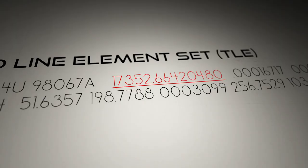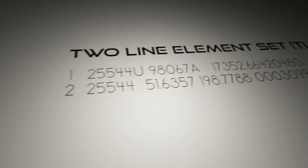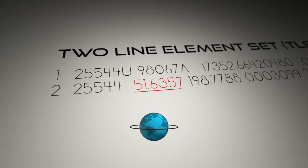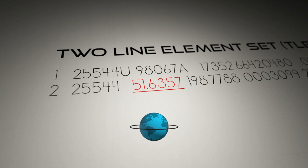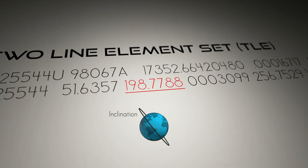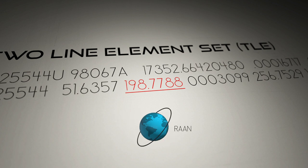After epoch time, we move down to the second line, and we have inclination. In this case, it is 51.6 degrees, so this object is somewhat inclined. Next is right ascension of the ascending node, or RAAN, and it's 198.7 degrees.